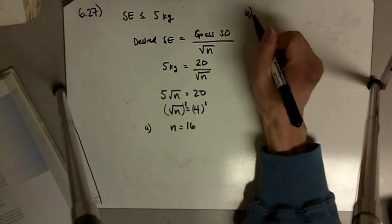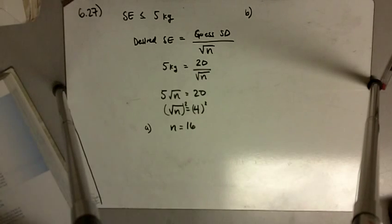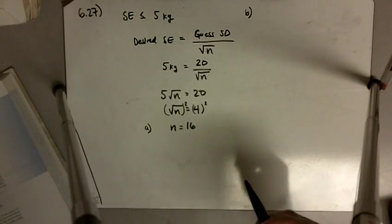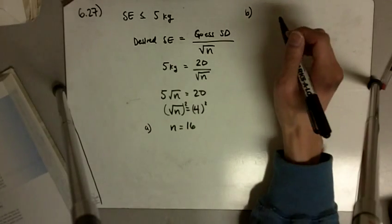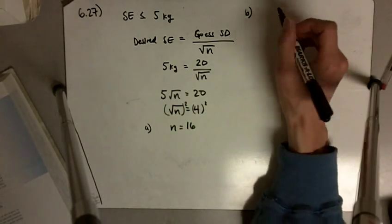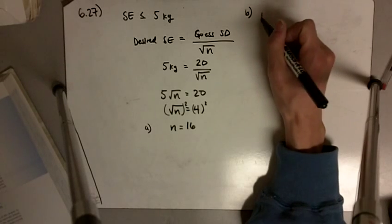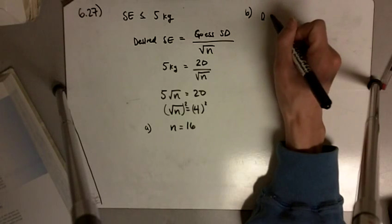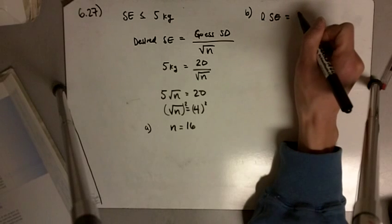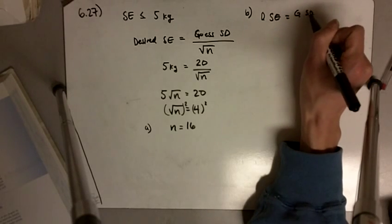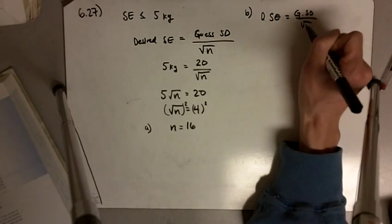Part B says if the guess of the standard deviation is 40, does the required number of cattle double? Okay, so let me just write desired SE is equal to the guessed standard deviation divided by the square root of n.